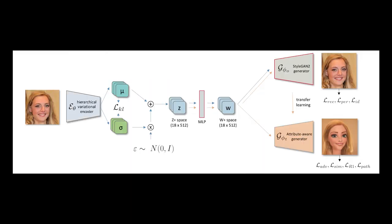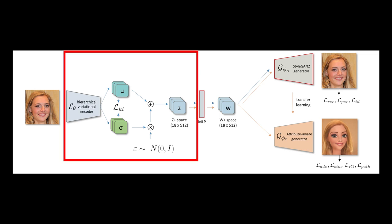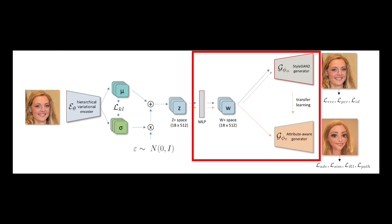Our pipeline consists of two major components: a hierarchical variational encoder that maps input images into a latent space that we call Z+, and an attribute-aware generator that is fine-tuned from StyleGAN2 and which is capable of generating results that appear in the style of the training exemplars.